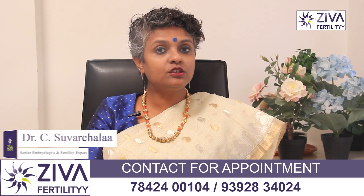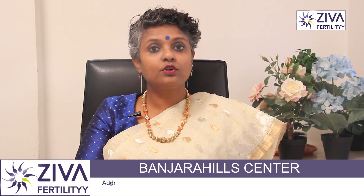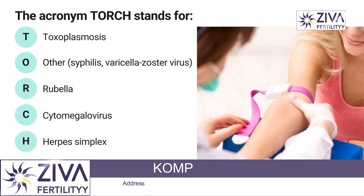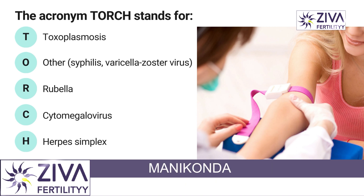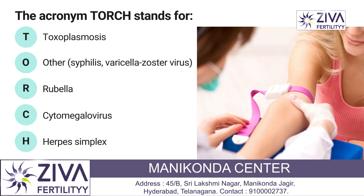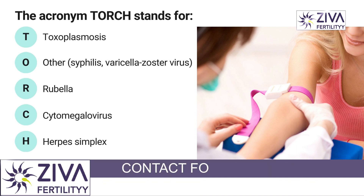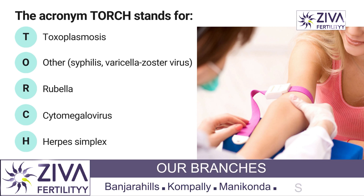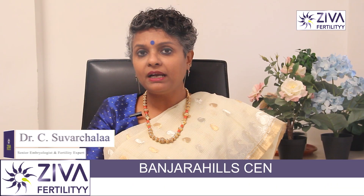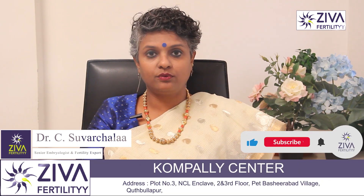So what does TORCH stand for? T is for Toxoplasmosis, O is Others which includes Syphilis or Varicella Zoster Virus, R is Rubella, C is Cytomegalovirus, and H is Herpes Simplex Virus. All you need to understand is that it's an analysis of a panel of diseases that can be assessed through this kind of test.